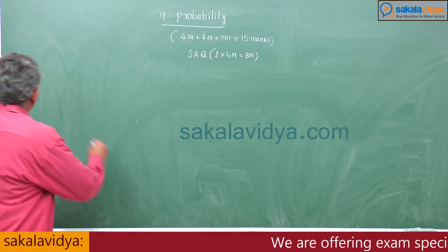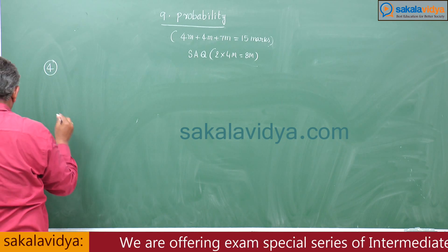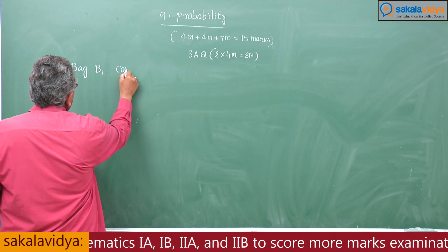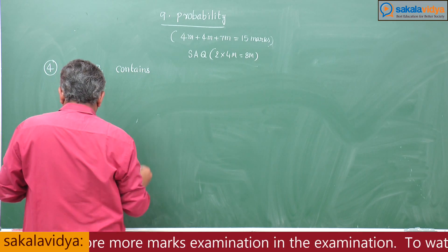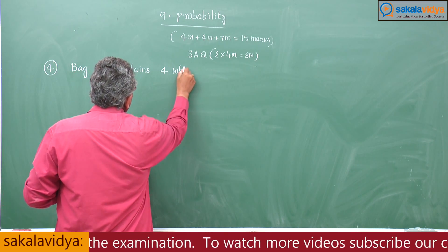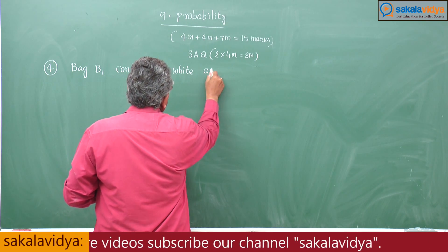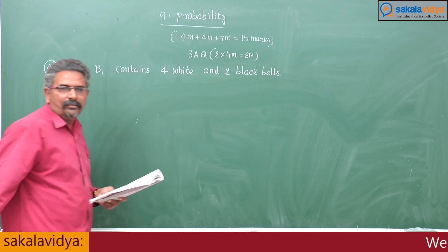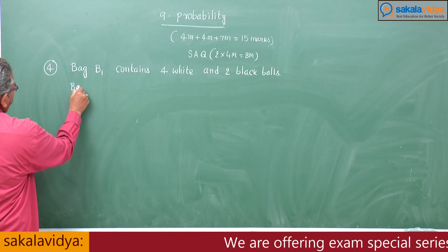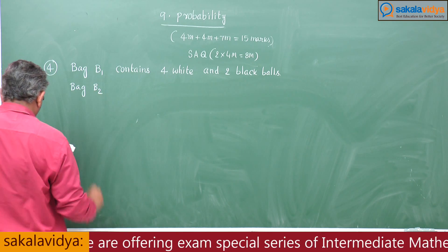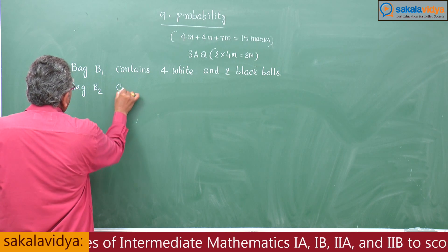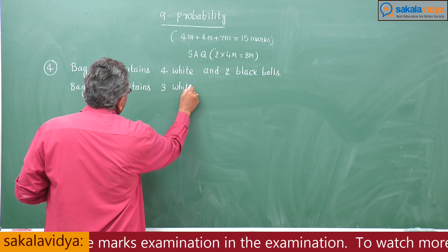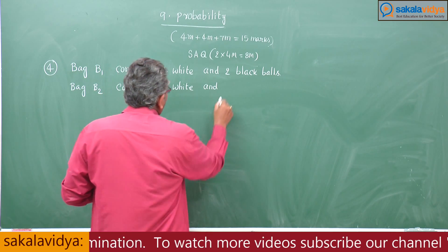Fourth problem. Bag B1 contains 4 white and 2 black balls. Bag B2 contains 3 white and 4 black balls.